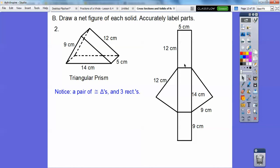Then this is going to be 12 by 5, that will be this piece right here. This down here will be 9 by 5. That's going to be this little rectangle. And then this dude right here is 14 by 5. This is my net figure of this triangular prism.